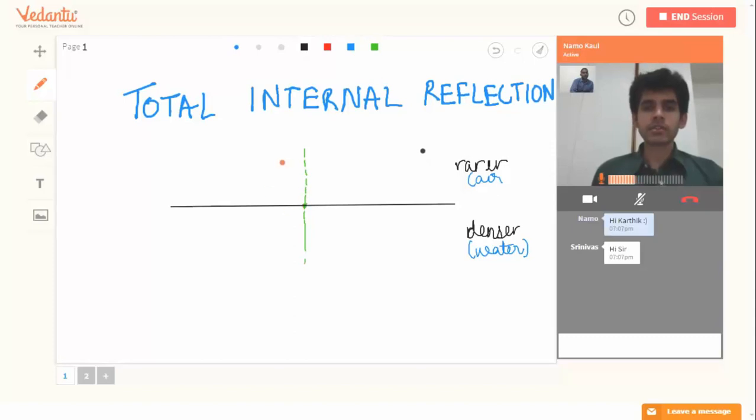This is the point of incidence. So at this point of incidence, if I incident a ray at a very small angle, for this ray of incidence can you retrace the refracted ray? So the ray will be going something like this, away from the normal, right? Perfect.